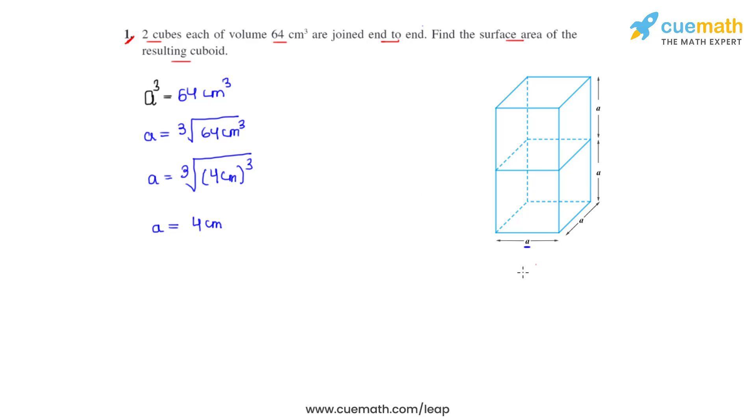From this we can see that the length of the resulting cuboid is a, the breadth is also a, but the height is 2 times a. So we can write the height as h = 2a.